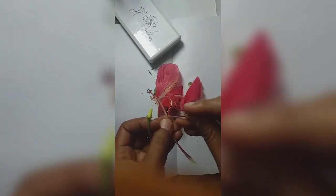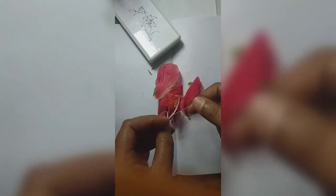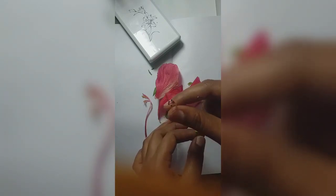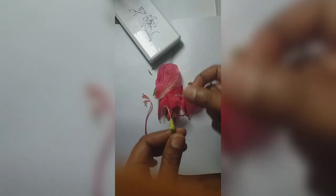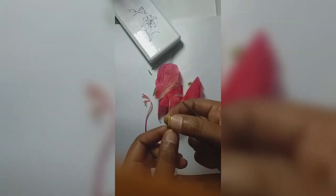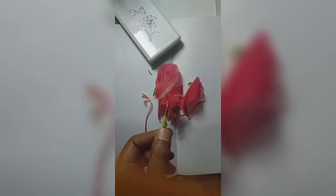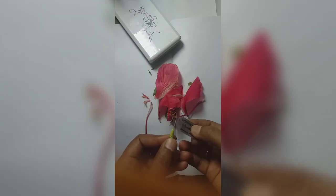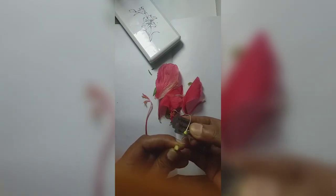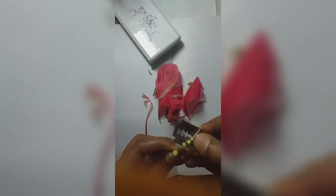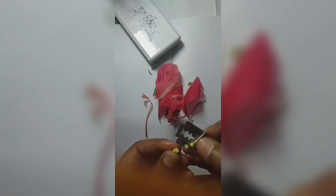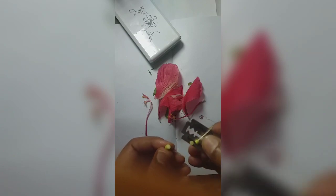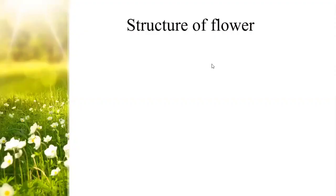The innermost whorl of the flower is the gynoecium. It has a pentafid stigma. It has a long tube-like structure in the middle of the flower called the style. The small basal part is the ovary, in which ovules are present. The ovary, when seen in cross-section, has 5 chambers. The ovules in the future develop into seeds. This is the structure of the flower.